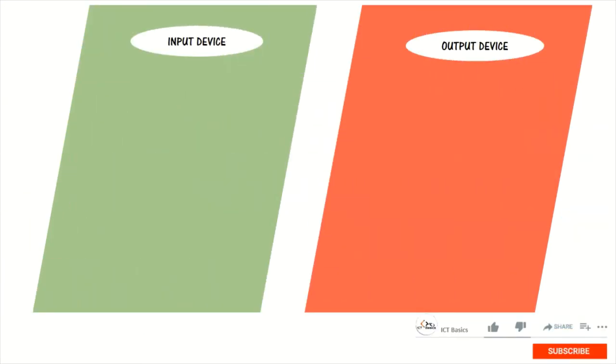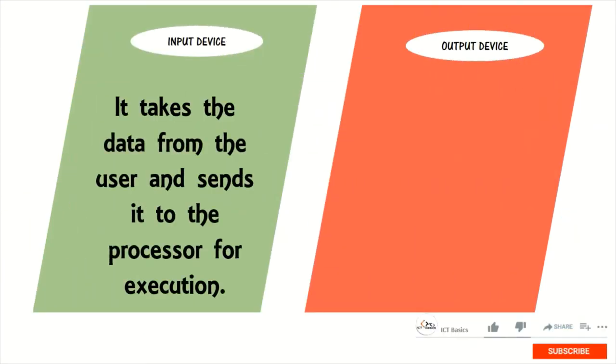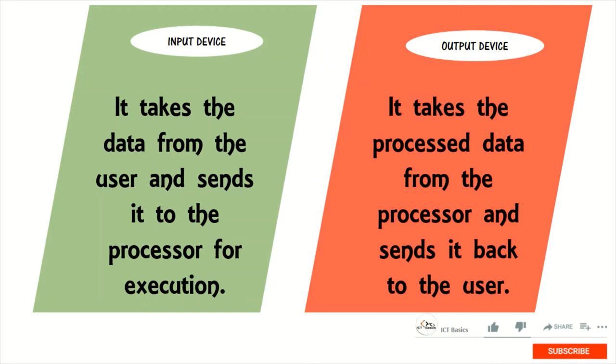Input device: It takes the data from the user and sends it to the processor for execution. Output device: It takes the processed data from the processor and sends it back to the user.